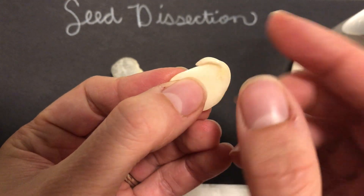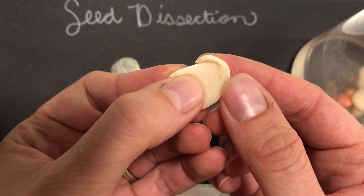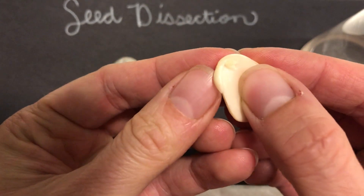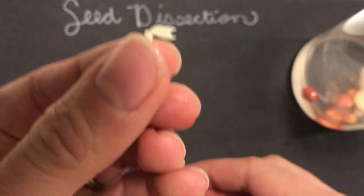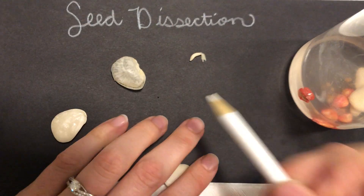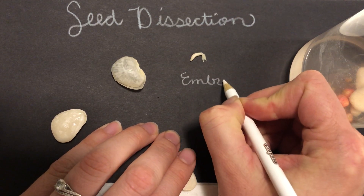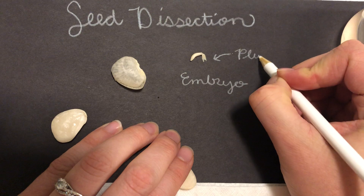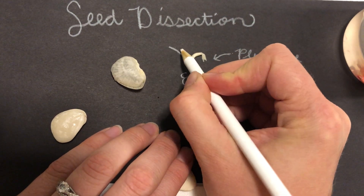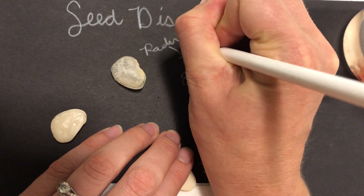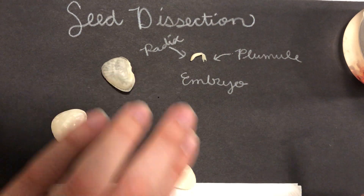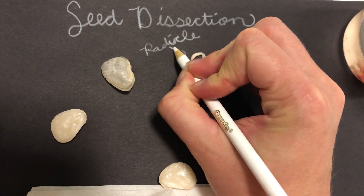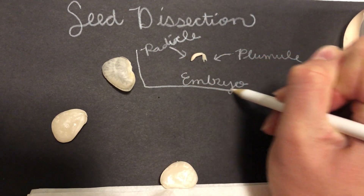Right here you see the radicle. The radicle is what will become the roots of the plant. Radicle comes from the Latin word 'radix', which literally means root. So right here we have the embryo with the plumule and the radicle — spelled R-A-D-I-C-L-E. All together, that is called the embryo.